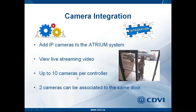Since the Atrium subsystem supports 10 doors, we can have 10 cameras per controller — one for each door. You can also associate two cameras to the same door, for example one inside and one outside. However, the maximum is still 10 cameras per controller. So with two cameras per door you can do five doors, or one camera per door for a total of 10. If you have 20 doors, you can do 10 camera-in/camera-out pairs or 20 cameras individually per door.